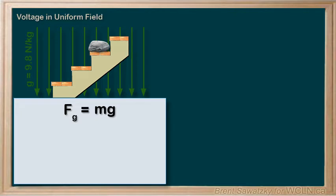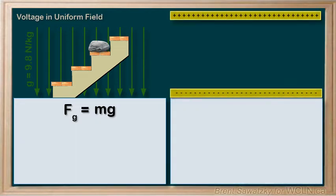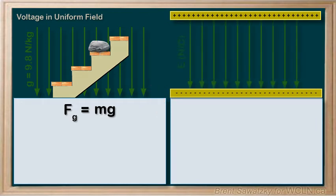Let's bring in our similar electric version of this uniform field. Two plates, like in a capacitor, with the positive plate on top and the negative plate on the bottom. We have our electric field E going from the top plate, away from the positive, towards the negative — the bottom plate.